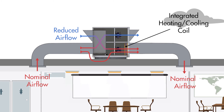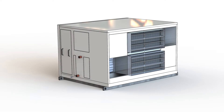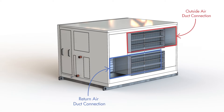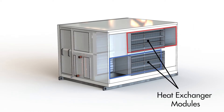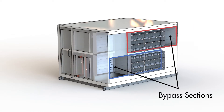Instead, recirculated air needs to be introduced to make up for any reduction in outside air and keep the supply air volume constant. And adding this recirculated air through an ERV or HRV unit requires heat exchanger bypass. To explain how return air can bypass an air-to-air heat exchanger in return air bypass mode, here is a suction side view of an ERV or HRV unit. This blue outline shows the return air duct connection, while this red outline shows the outside air duct connection. These duct connections encompass the heat exchanger modules and the bypass sections.